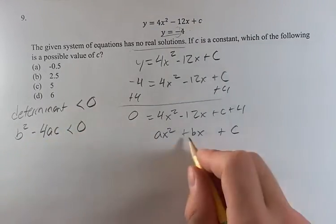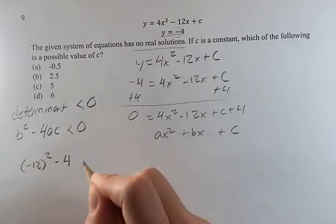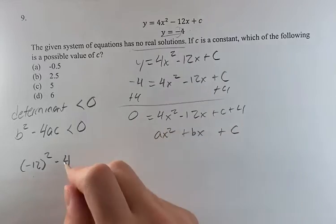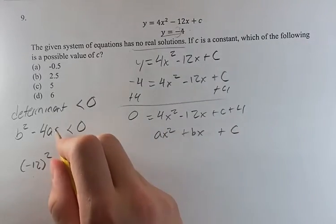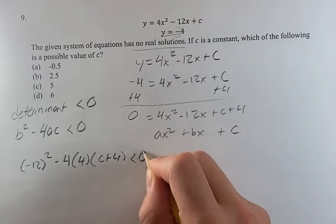What is that for this problem? So you have b squared, b is negative 12, minus 4a - a is 4 - and then c is this c plus 4. Again, this is a different c, this is the c that we're solving for.